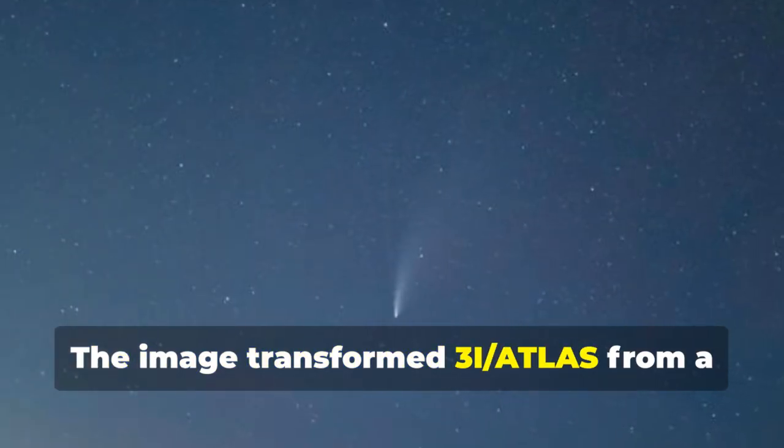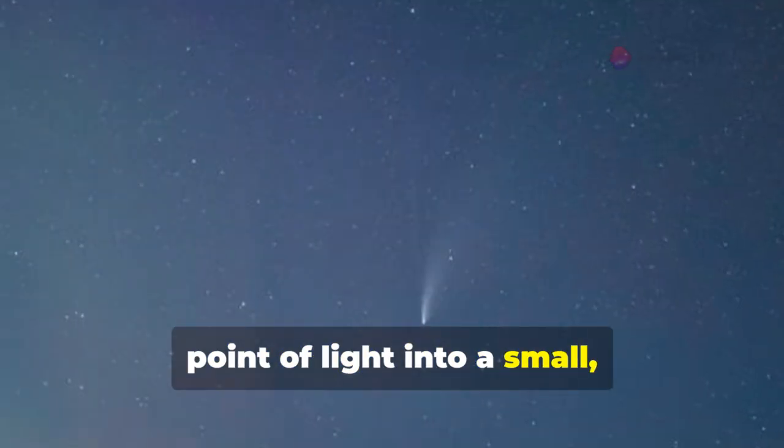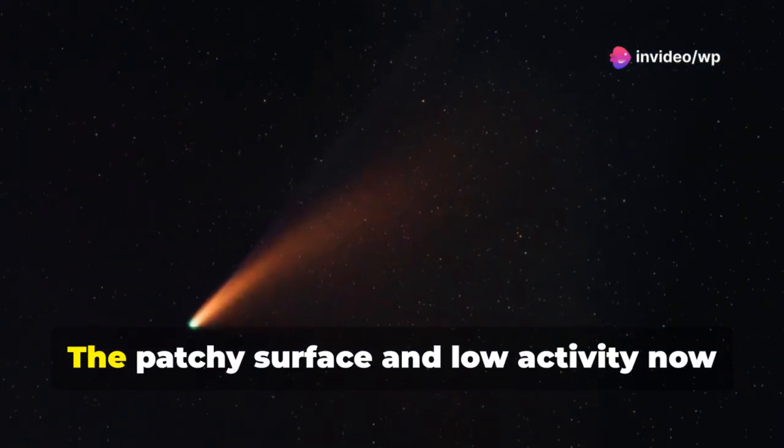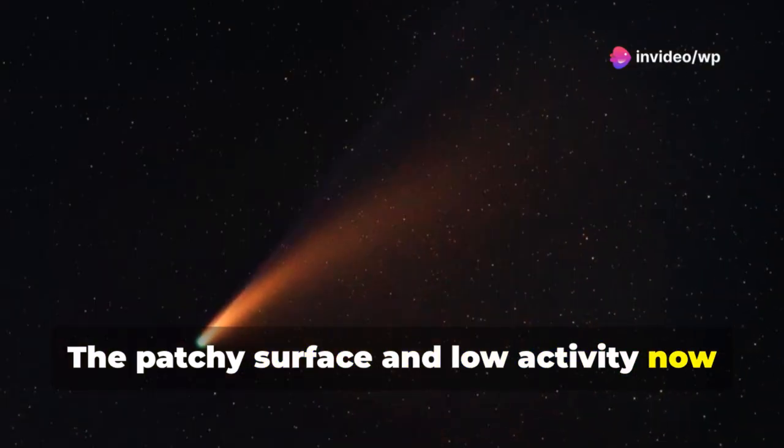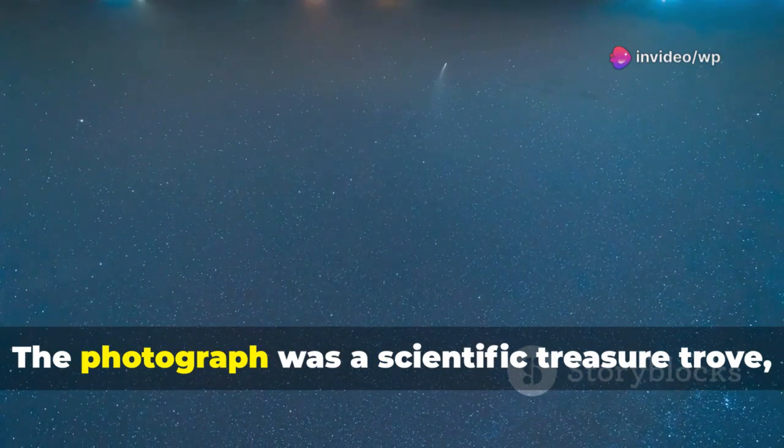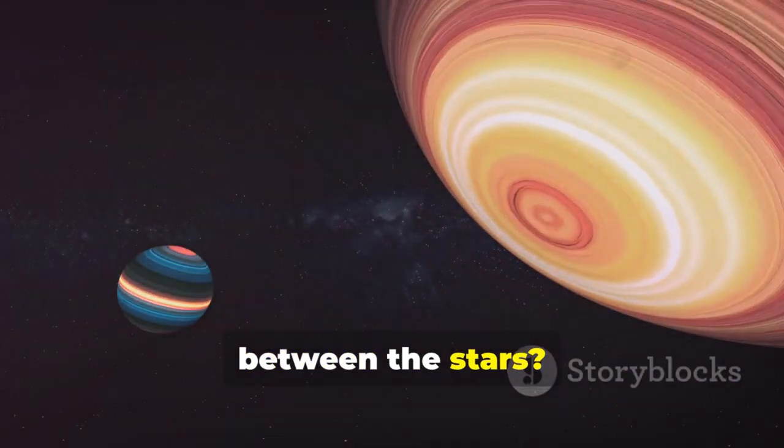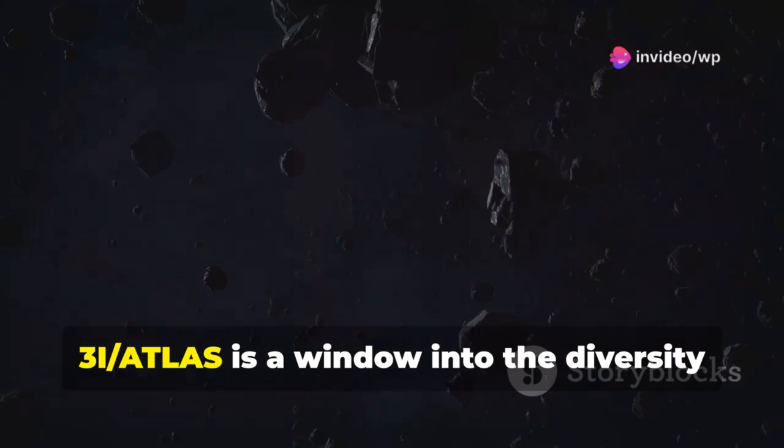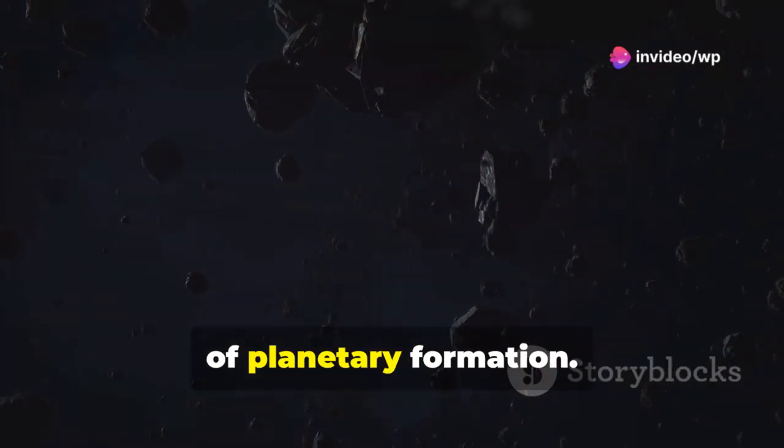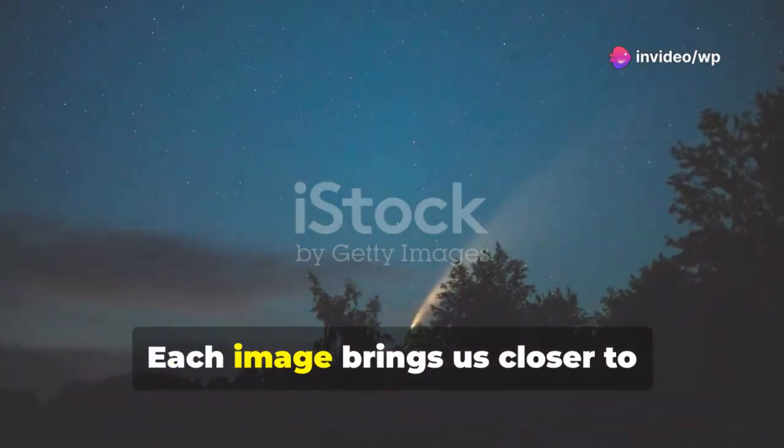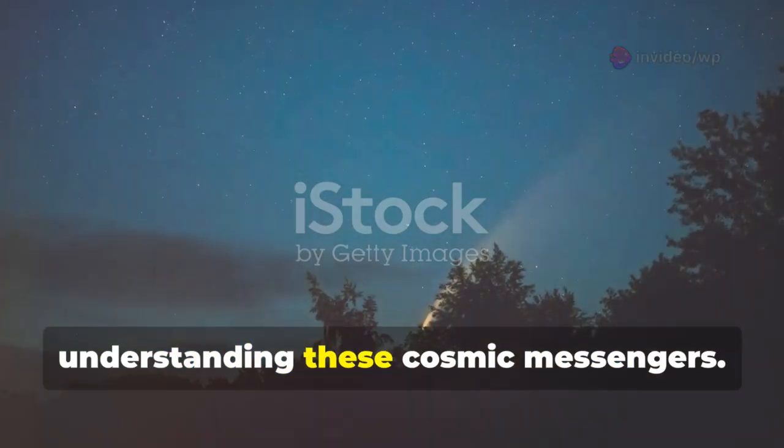The image transformed 3I Atlas from a point of light into a small, alien world. The patchy surface and low activity now made sense. The photograph was a scientific treasure trove, but it raised new questions. How many other contact binaries drift between the stars? 3I Atlas is a window into the diversity of planetary formation. Each image brings us closer to understanding these cosmic messengers.